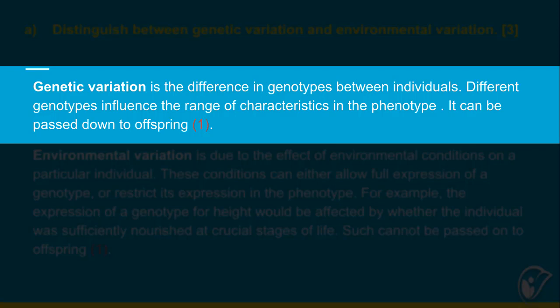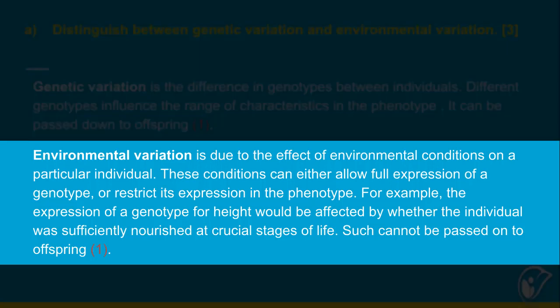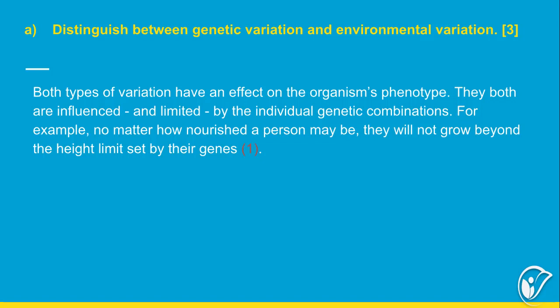Most characteristics are defined very strongly by your genes, and then there are some that aren't — the latter are also influenced by environmental factors. Which brings us to environmental variation. This is due to the effect of environmental conditions on a particular individual. These conditions can either allow full expression of a genotype — for example, if you're properly nourished and that allows you to reach your full height — or restrict its expression in the phenotype.